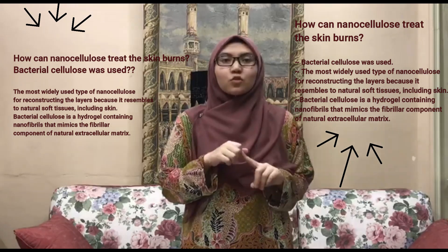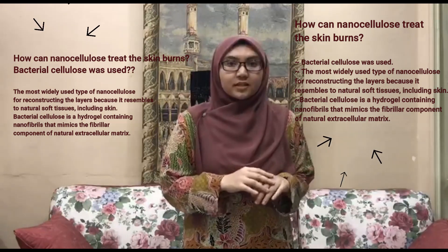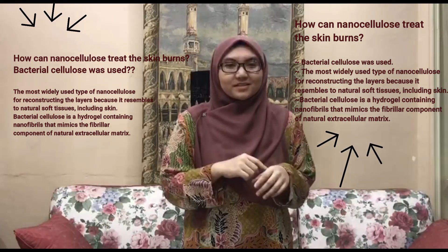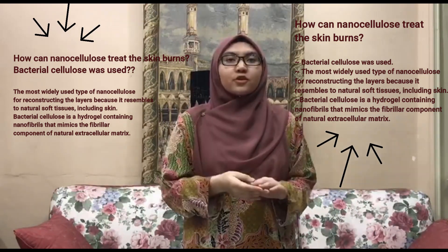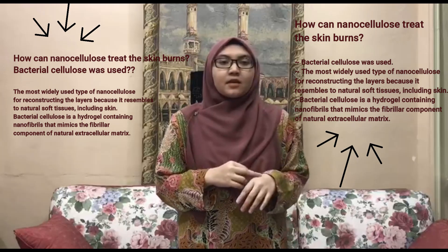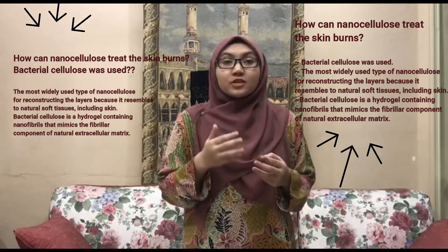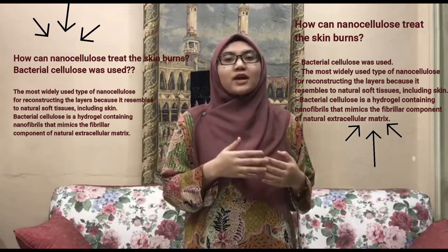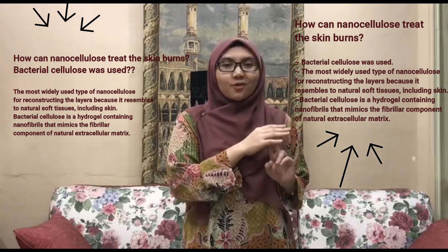The Nanocellulose used to treat skin burns is Bacterial Cellulose. Skin tissue engineering involves reconstructing two main layers: the epidermis and the dermis. Bacterial Cellulose is the most widely used type of Nanocellulose for reconstructing these layers because it resembles natural soft tissues including skin. It is a hydrogel containing nanofibrils which mimic the fibrillar component of the natural extracellular matrix. Bacterial Cellulose has great capacity to retain moisture and has appropriate mechanical properties such as strength, Young's modulus, elasticity and conformability.